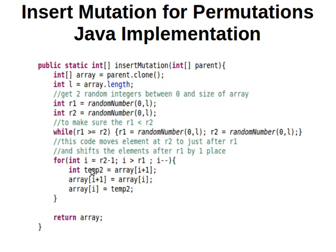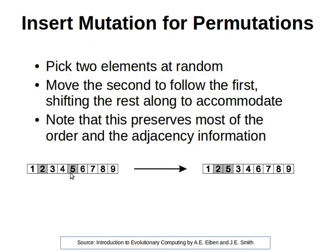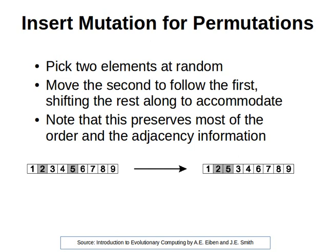We start at the element at r2 minus one and we make sure that our index is larger than r1 because we don't want to touch r1, and then we just go backwards — that's why we decrease i. So we start at r2 minus one and go left. We swap these two elements: the four comes here, five comes here — that's one iteration. In the next iteration, three and five are swapped, five comes here and three goes there.